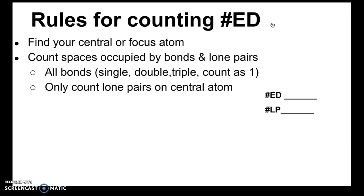Here are the rules for counting. First, we're focusing on a central or focus atom. If you have a molecule with a central atom, that's what you focus on. However, if you have a larger molecule without a central atom, you'll be told which atom to focus on. After we find our central or focus atom, we count the spaces occupied by bonds and lone pairs. All bonds — whether single, double, or triple — count as one. We only count lone pairs on the central atom; lone pairs on terminal atoms are ignored. Let's look at our first example.